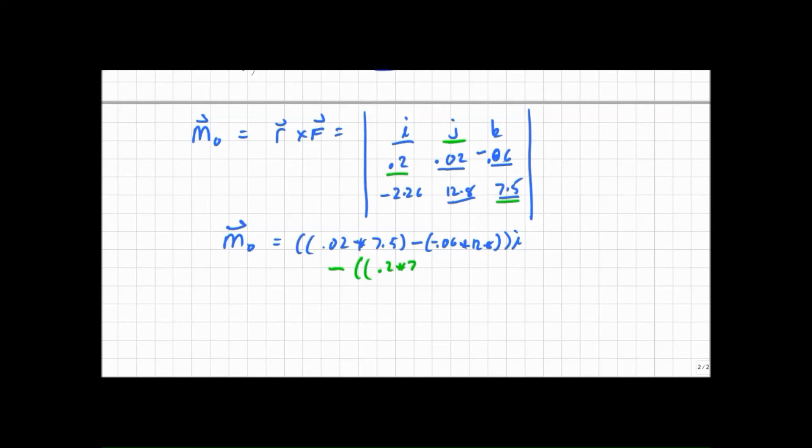I've got 0.2 times 7.5, minus, again our minus 0.06 times minus 2.26, close that bracket, j.